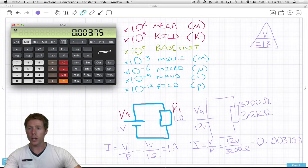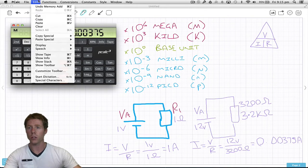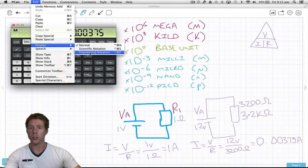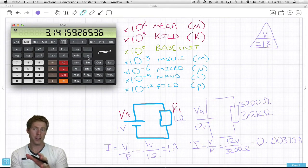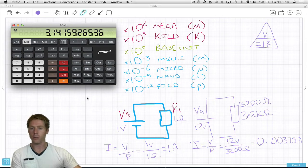For my particular calculator, I don't have a button here. What I have to do is go Edit, Display, Engineering Notation. Now this is much easier to look at.